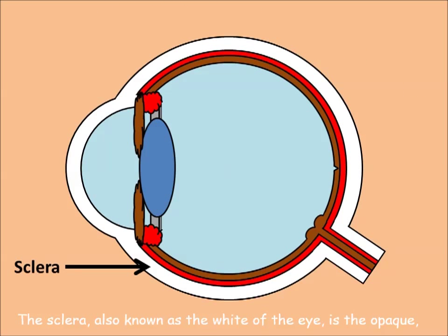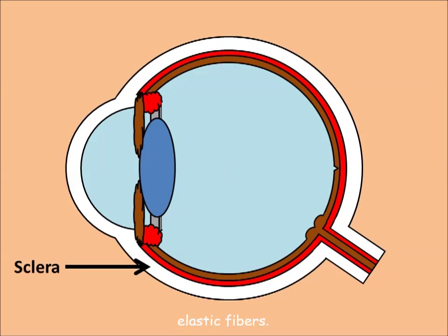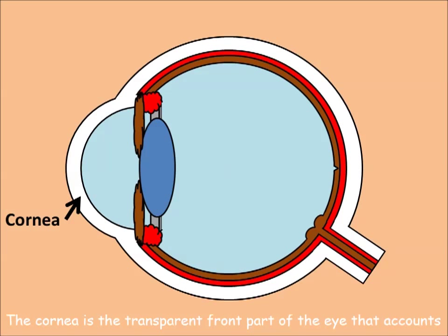The sclera, also known as the white of the eye, is the opaque, fibrous, protective outer layer of the eye containing collagen and elastic fibers.